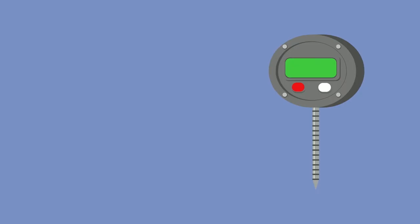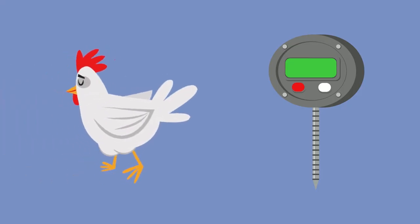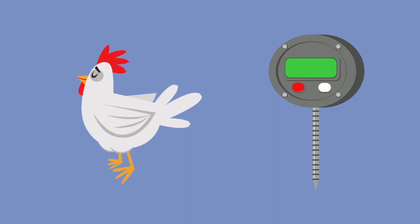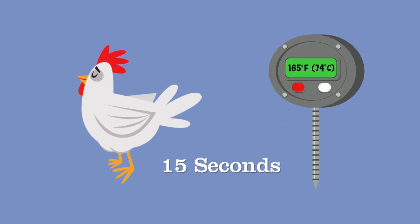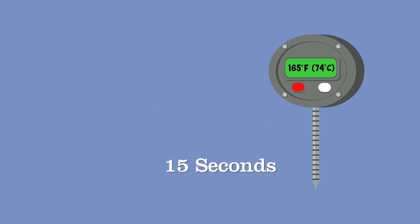Alright, let's check out the cooking temperatures you need to know. Remember, we're talking about internal temperatures here, not surface temperatures. Poultry, including whole or ground chicken, turkey, or duck, should be cooked to 165 degrees Fahrenheit (74 degrees Celsius), and you want to hold that temperature for at least 15 seconds.